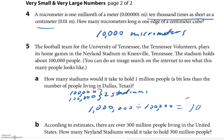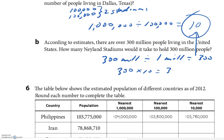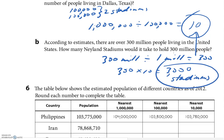According to estimates, over 300 million people live in the United States. How many stadiums would it take to hold 300 million people? We know 10 stadiums hold 1 million people. So 300 million divided by 1 million equals 300, and 300 times 10 equals 3,000. It would take three thousand stadiums.